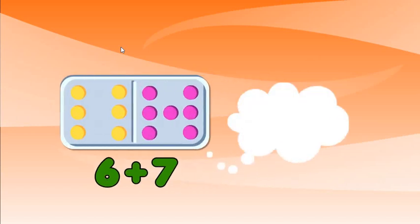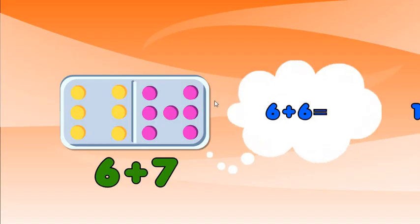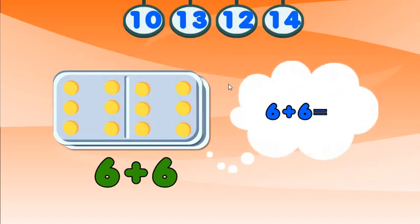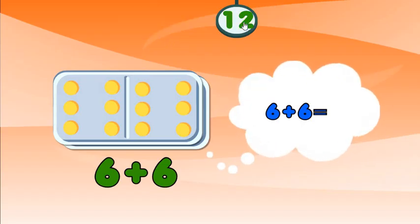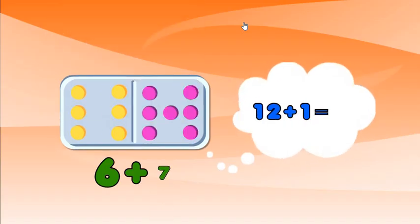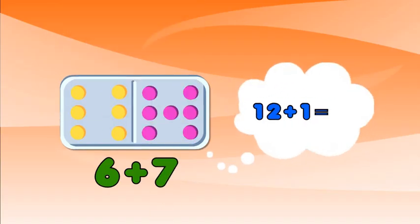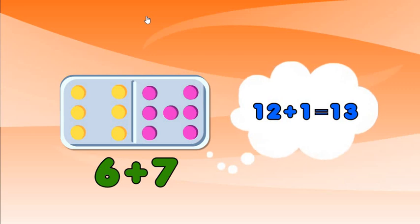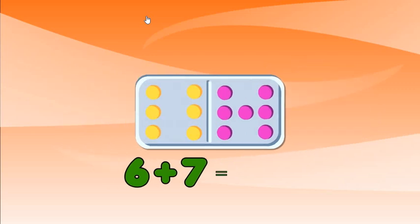Double 6 is 12, so now add 1. Find the answer to 12 plus 1. Fabulous! 6 plus 7 is 13.